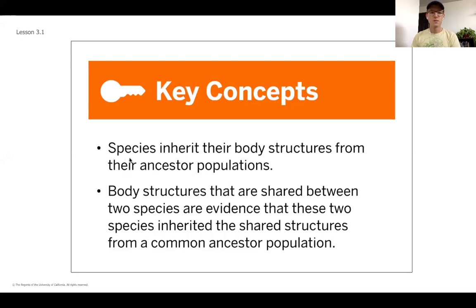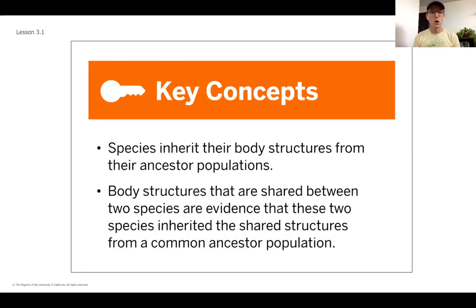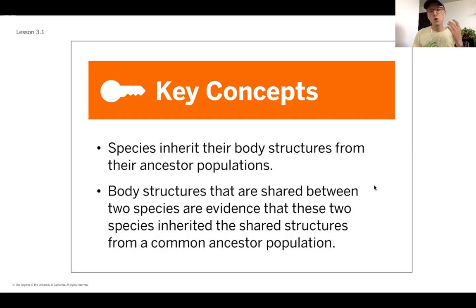The first couple of concepts we got out of chapter one were that species are going to inherit their body structures from their ancestor populations. As a reminder, we also learned what the word 'structure' means — those are all different types of body parts, from limbs to nostrils to skull shapes. Those body structures are really what we use as evidence that two different species share evolutionarily common ancestors, meaning they are related.